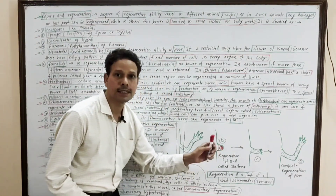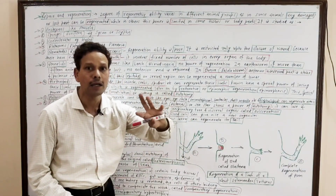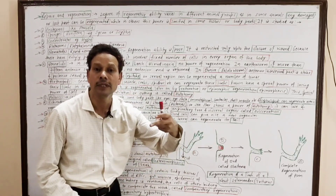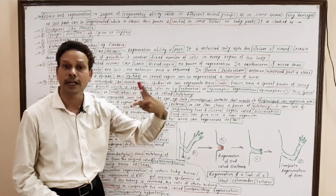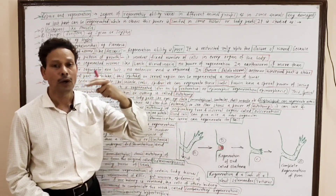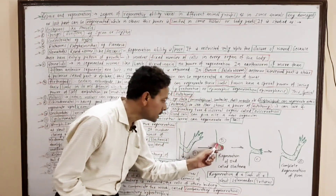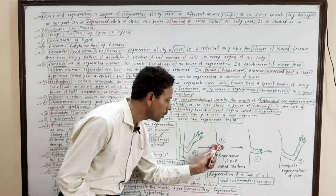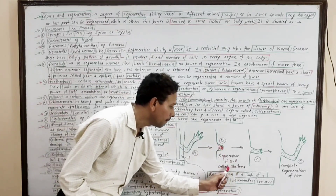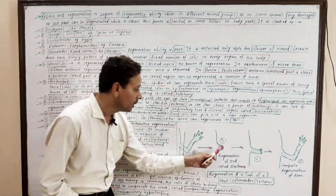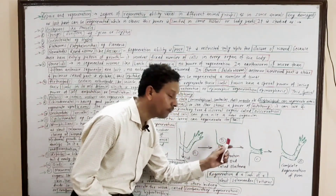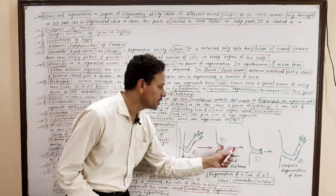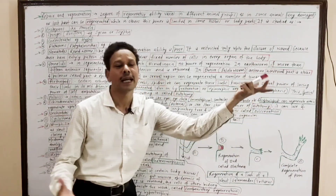After closure of the wound, a mass of undifferentiated or de-differentiated cells — derived from differentiated cells like connective tissue, muscle tissue, or bone tissue — produces a conical projection called a bud, known as the blastema. In the blastema, these undifferentiated cells undergo re-differentiation, and as a result, a new limb gets restored.